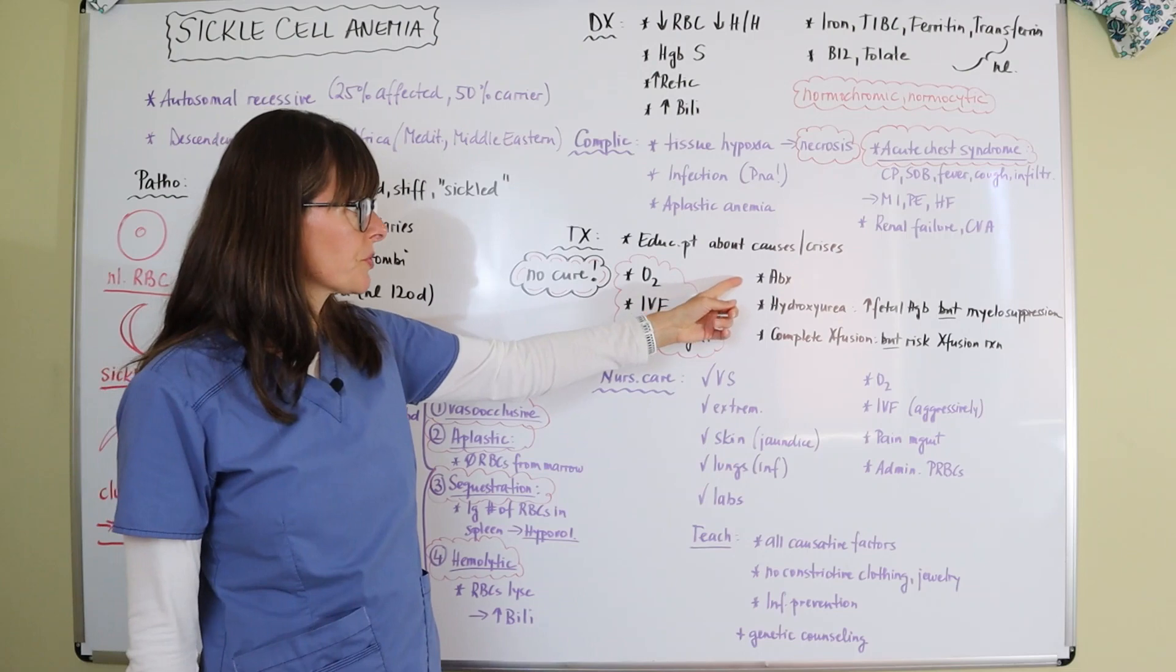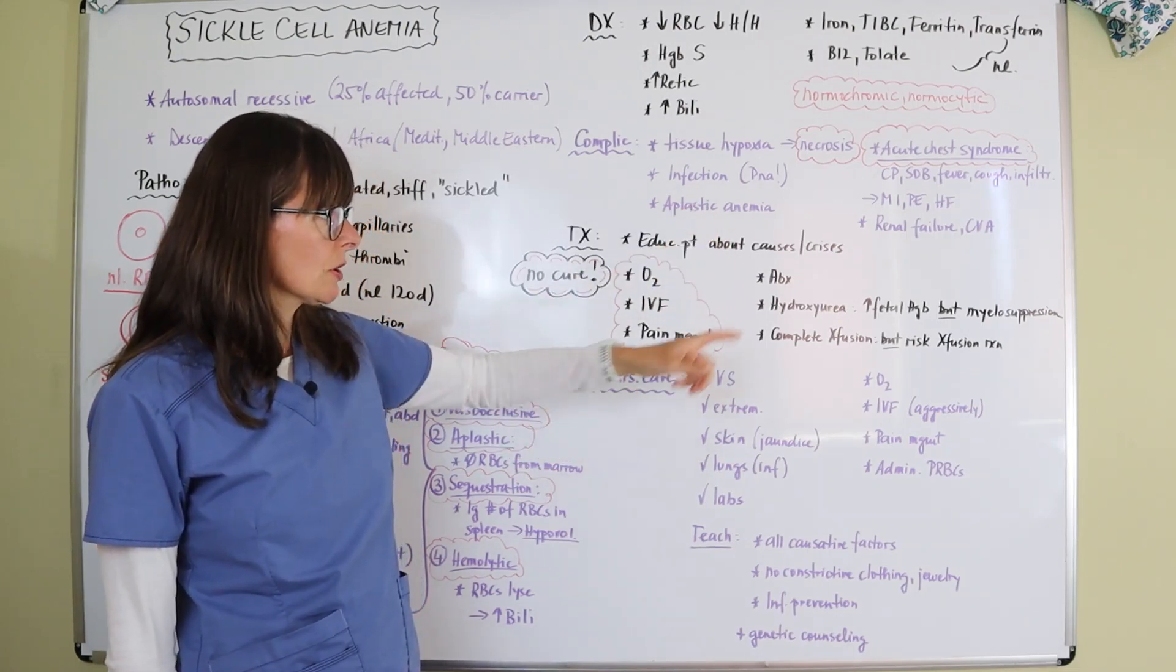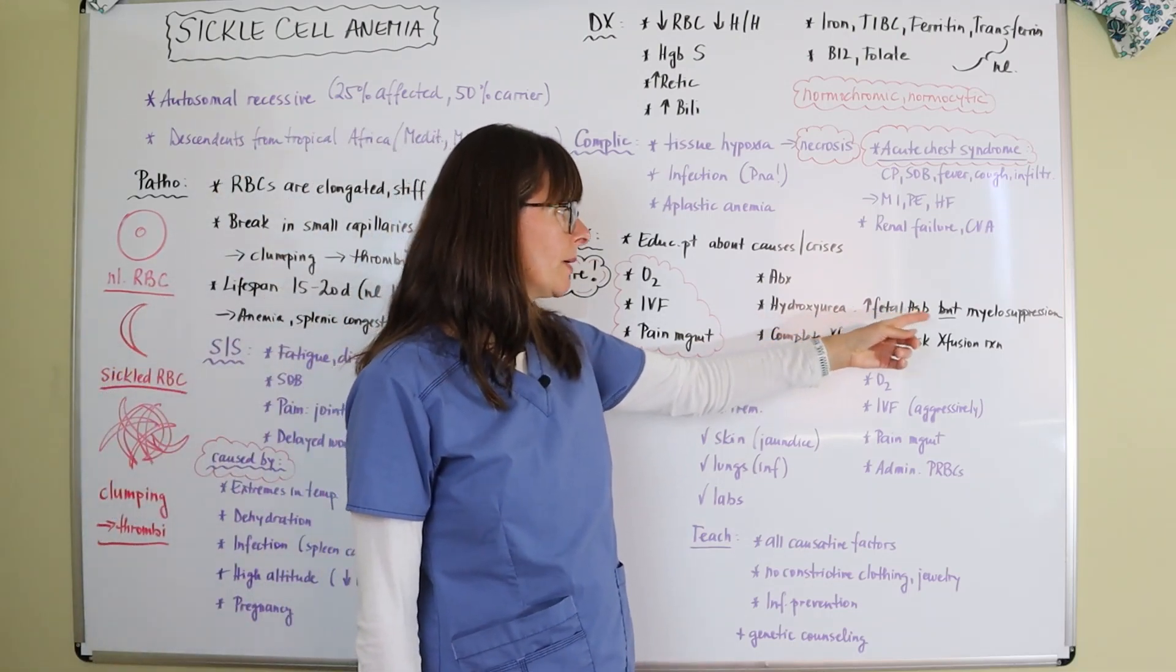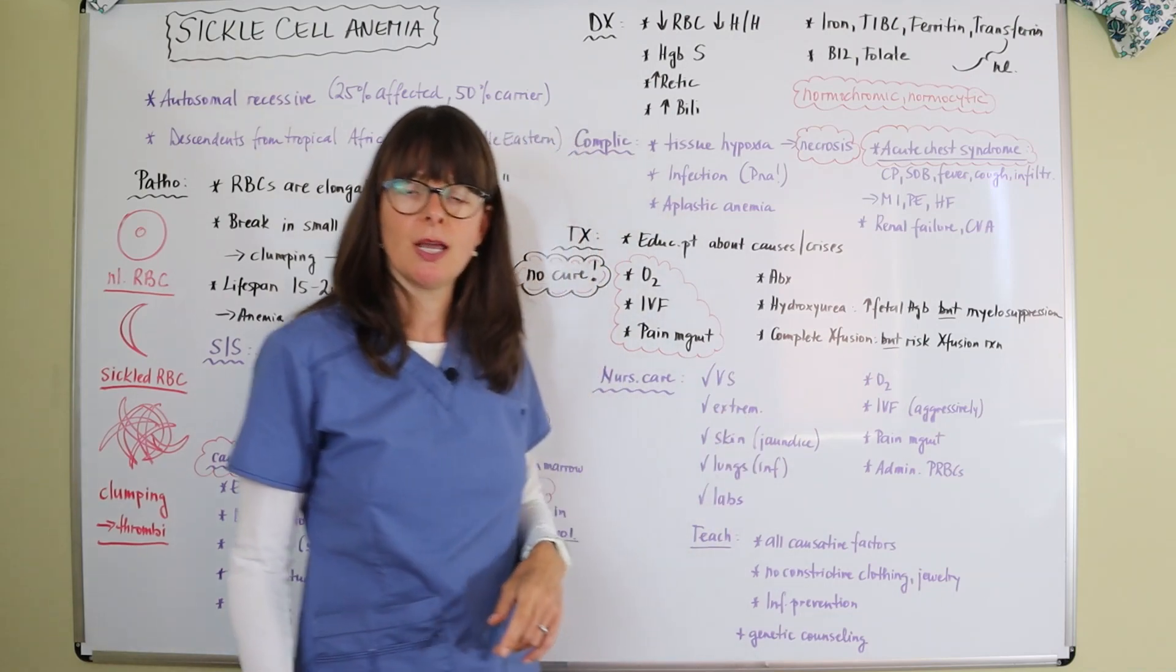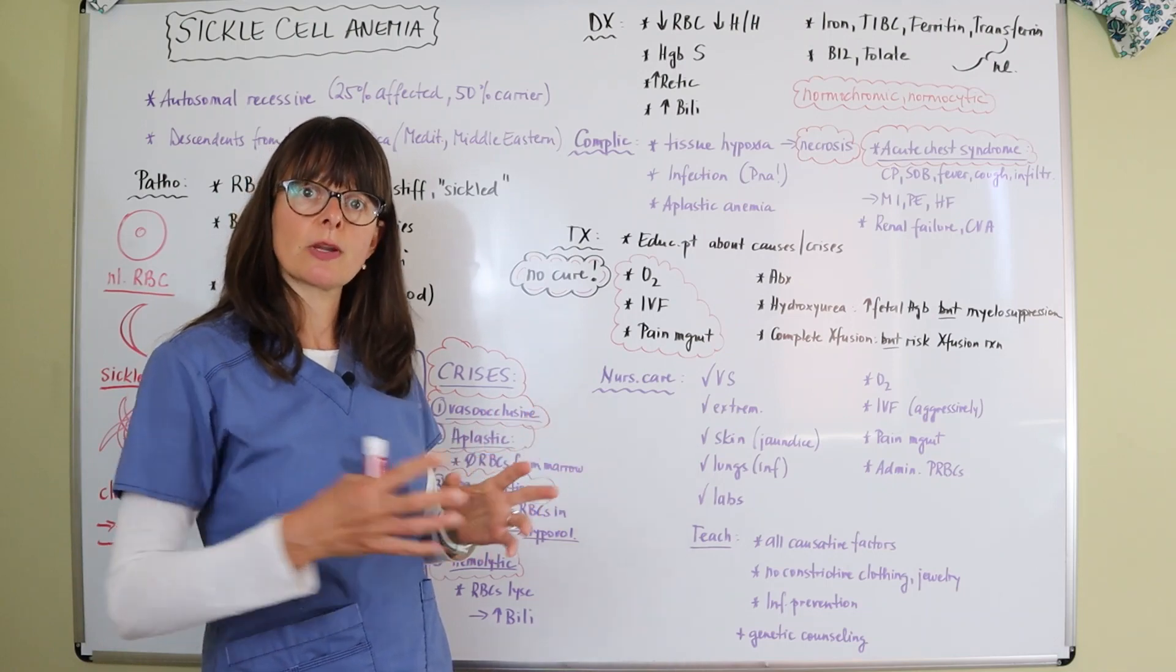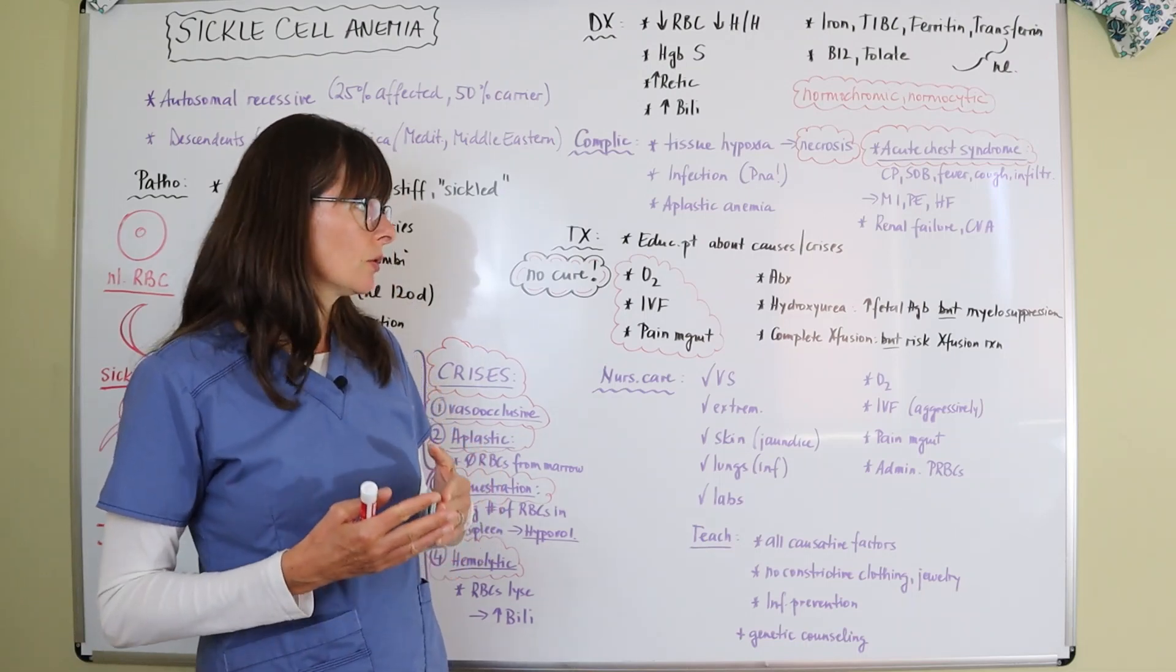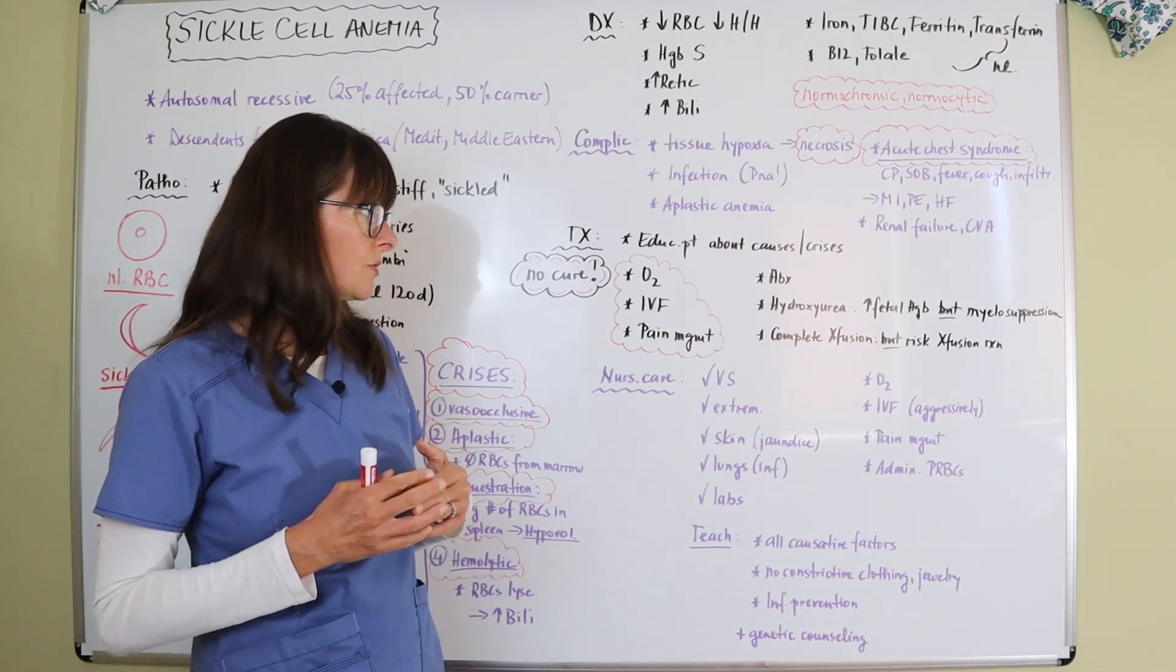Also, we're going to treat the patient with antibiotics if there's an infection present. And then there's a medication called hydroxyurea, which is a special treatment for sickle cell disease, which increases fetal hemoglobin, but unfortunately it can also cause myelosuppression. Myelo referring to the bone marrow. So now we have a patient in sickle cell crisis, we give them this medication, but now we're suppressing that bone marrow from producing more red blood cells and that is not a good thing. So the provider will have to very carefully discuss the risks and benefits with the patients here.